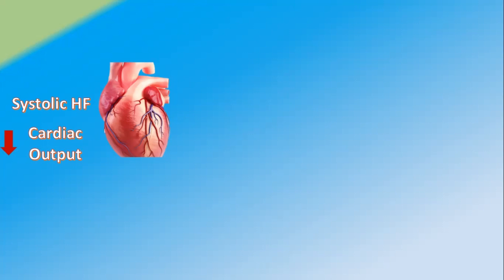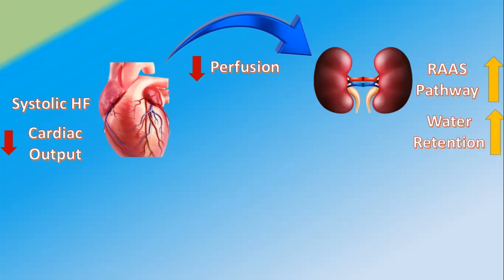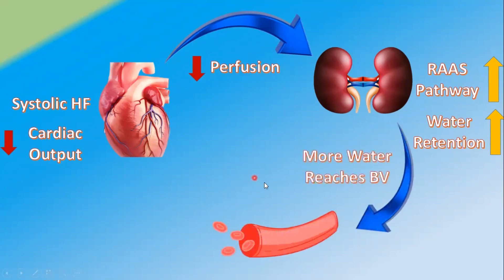Because of reduced ejection fraction, cardiac output reduces. With a reduced cardiac output, blood flow towards the kidney reduces — that means perfusion of the kidney reduces. This results in reduced perfusion, and the kidney starts activating the RAS pathway. With activation of the RAS pathway, it starts retaining more and more water. Since more water is retained, more water reaches the blood vessels, increasing blood volume within the vessels.